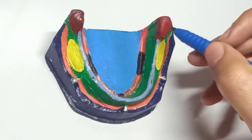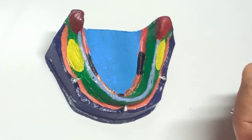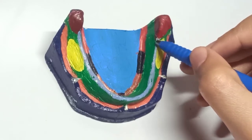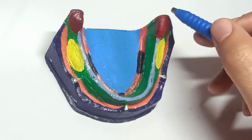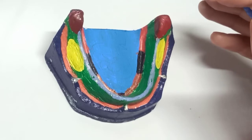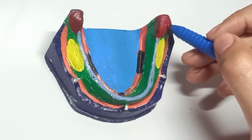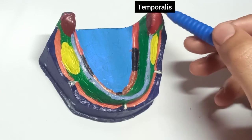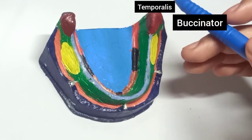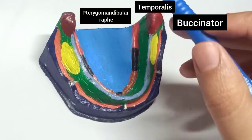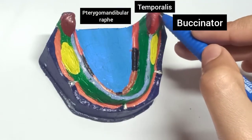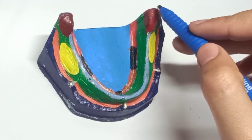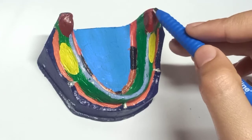The retromolar pad area is an important structure that forms the posterior seal of the mandibular denture. It is present behind the pear-shaped pad distal to the last tooth. The retromolar pad is a collection of loose areolar tissues with an aggregate of mucosal glands, and the denture should cover only two-thirds of the retromolar pad area. It is bounded posteriorly by the temporalis muscle, laterally by the buccinator muscle, and medially by the pterygomandibular raphe and the superior constrictor. These muscles limit the extent of the denture.